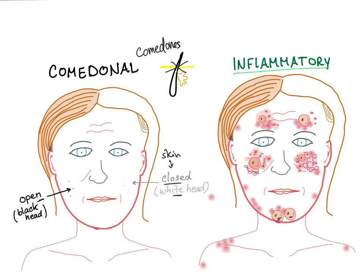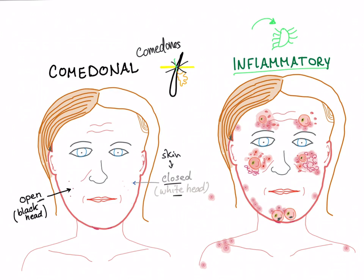In inflammatory acne, there is a reaction to several factors, including a bacterium named Propionibacterium acnes within the follicle. This reaction leads to rupture of the follicle epithelium, leaking of sebum to the surface, and an immunological response. Inflammatory acne is immunological in nature.